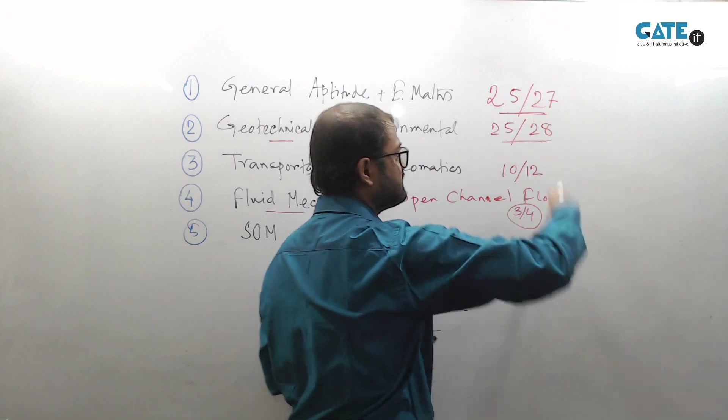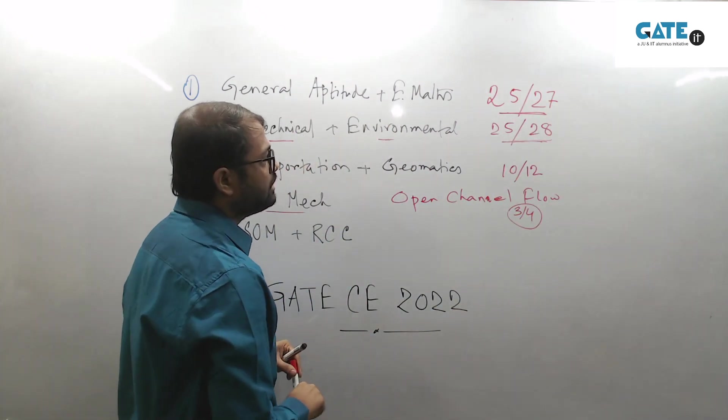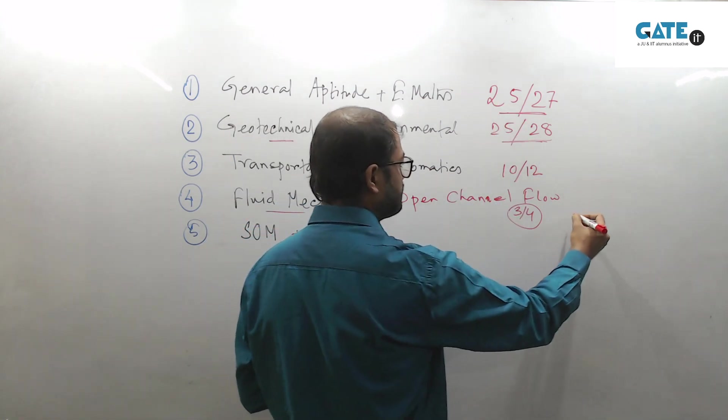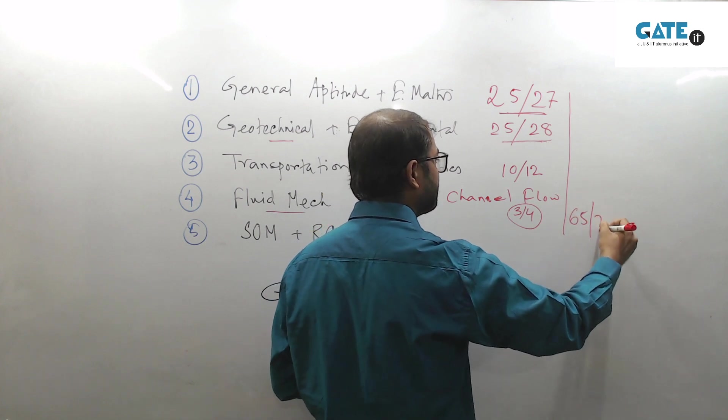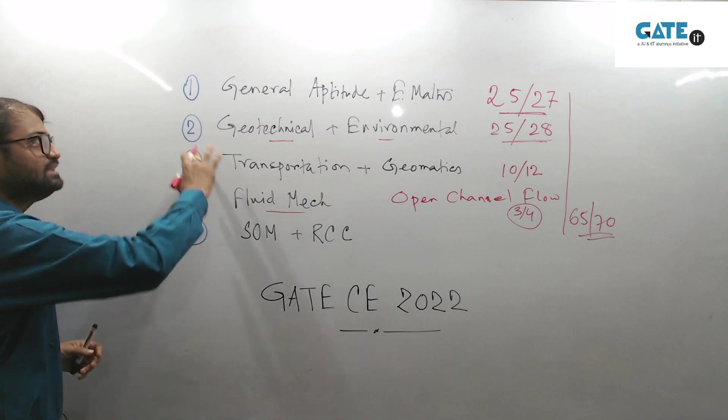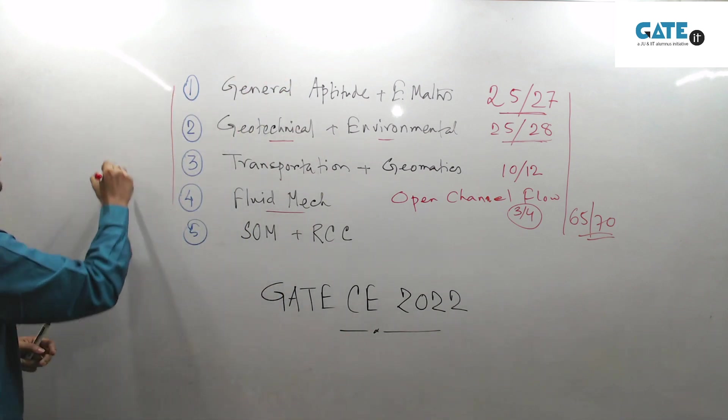So if you just sum all these things, all these marks, if you just add it up, you'll be getting somehow from 65 to 70 marks. So right now you are standing at a marks of 65 to 70 marks. That is why these are called major subjects. These are actually called major subjects.